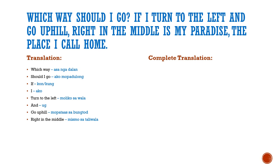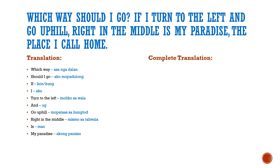Is — mao. My paradise — akong paraiso. Paradise is paraiso. Akong paraiso — my paradise.